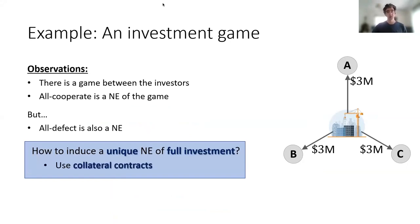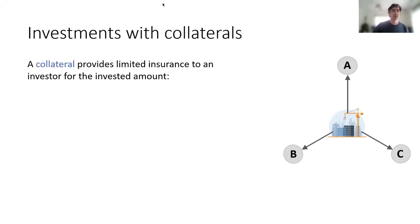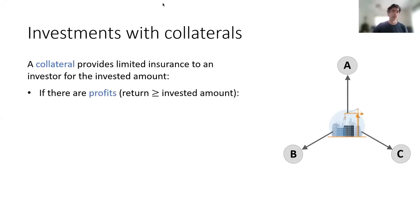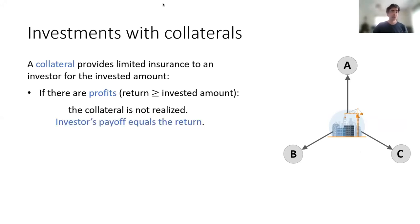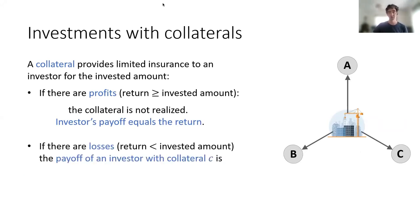We're going to use collateral contracts and study how they can do that. A collateral contract is a financial instrument that aims to give security for investors. Securing collaterals has some cost, like buying insurance, and a firm would prefer to give less collateral if it can. The types of collateral contracts we consider provide limited insurance for an investor for the invested amount. If there are profits — the return is more than the investment — the collateral is not realized. But if there are losses, the payoff for an investor with collateral of amount C is the return plus the collateral amount, capped at the investment amount.